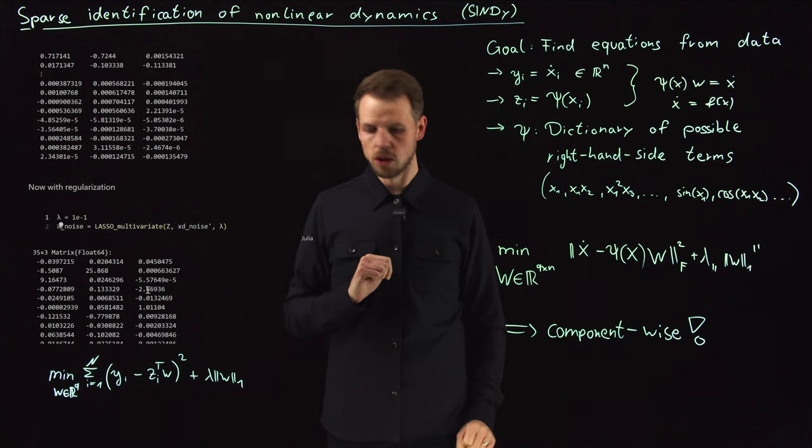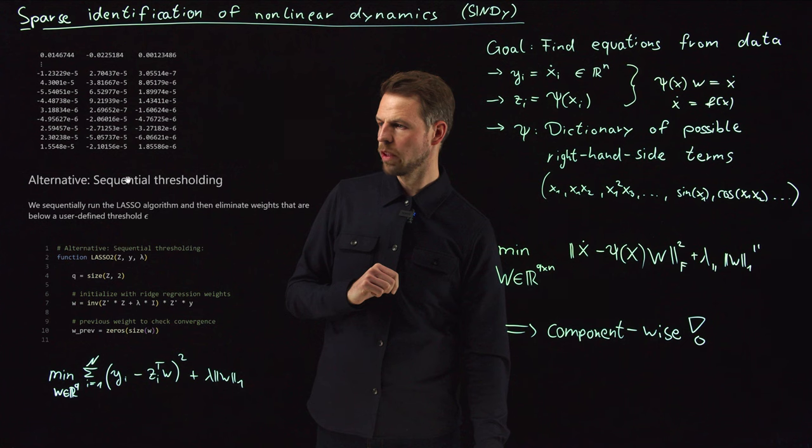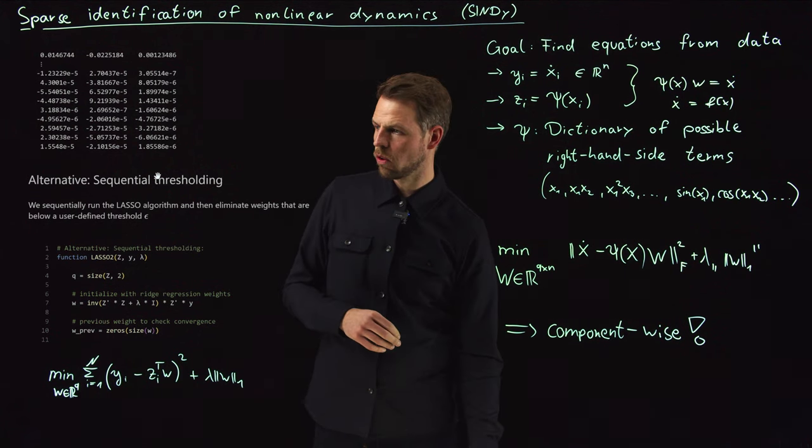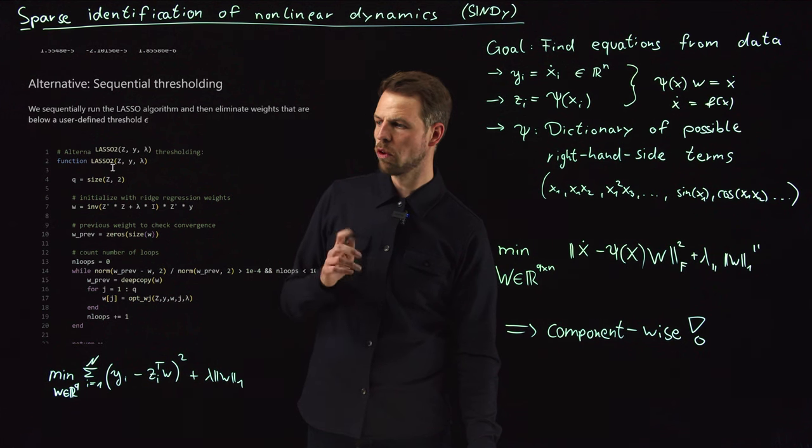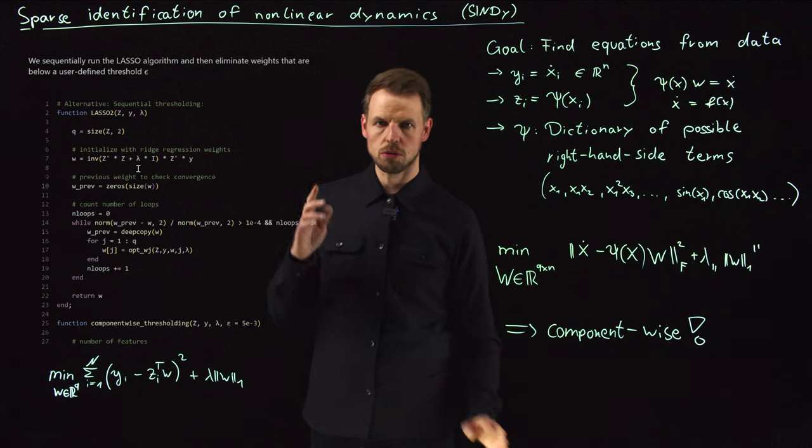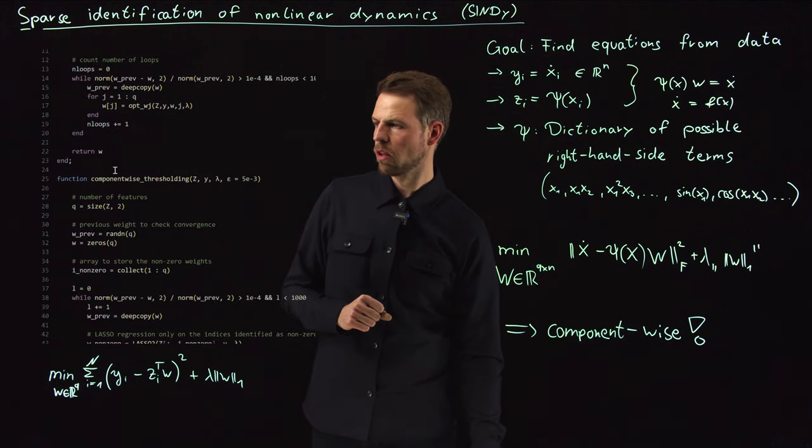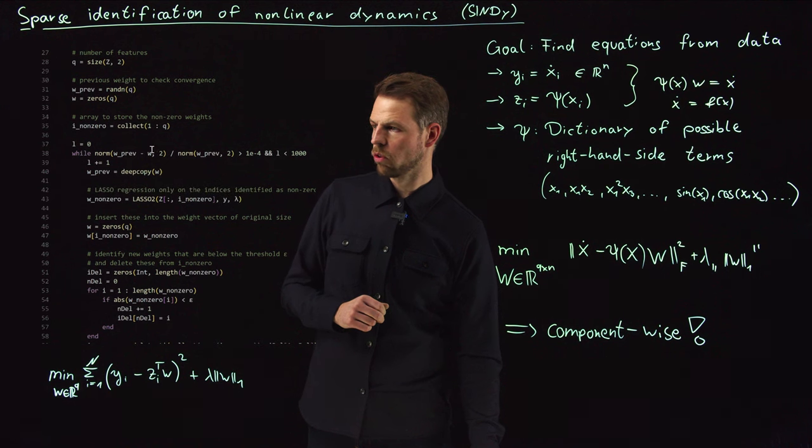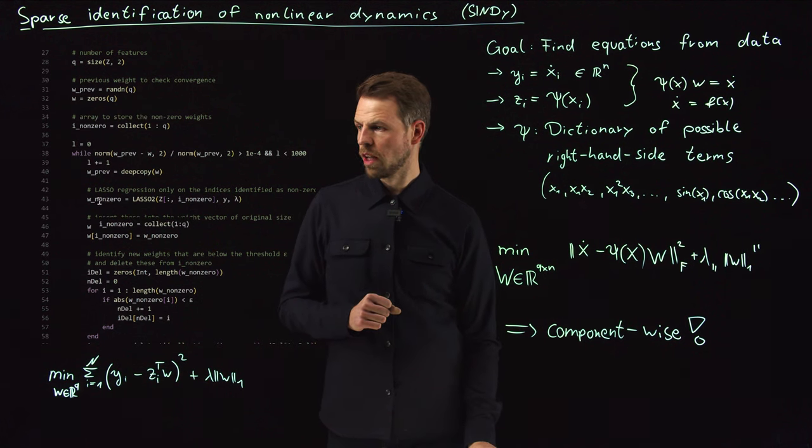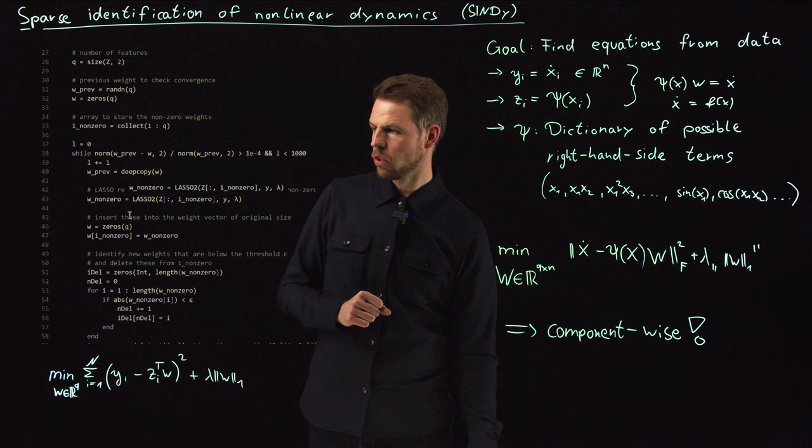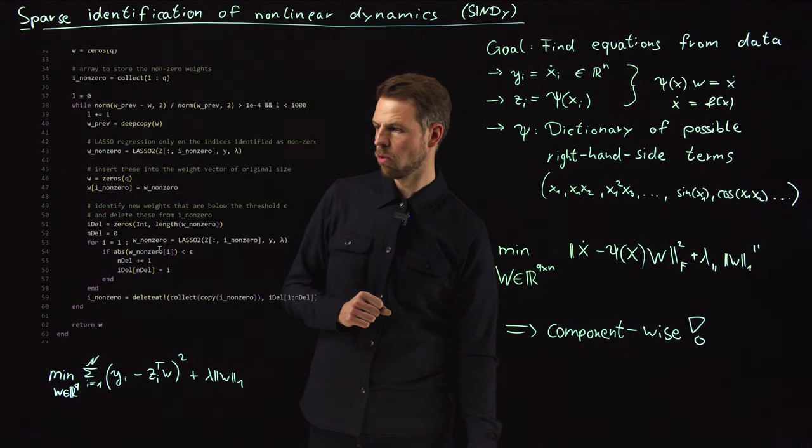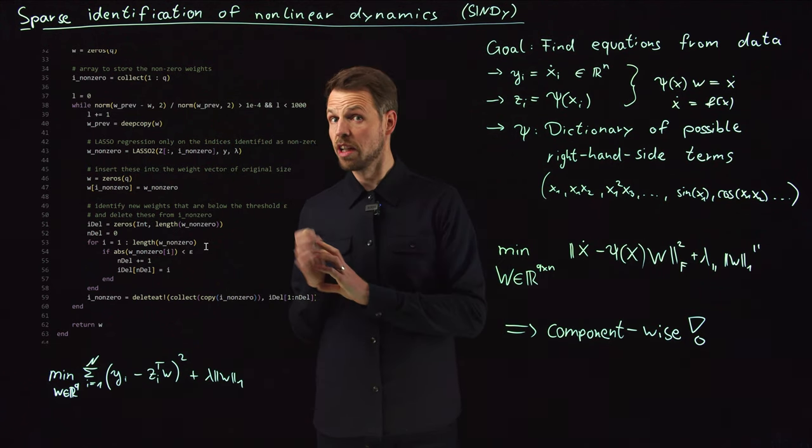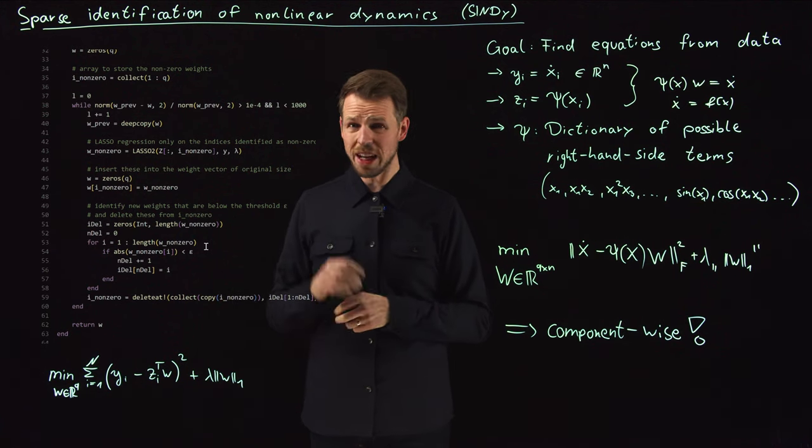One thing that we have not talked about until now is the problem that we can actually use thresholding to manually kill weights that are of a small value. All I'm doing now is I'm adding, this is my lasso algorithm now, a lasso 2 version basically. This component-wise thresholding is really what's important here. What this means is you do the lasso over the non-zero weight. You start with all indices are non-zero. You do the lasso over the non-zero weights here and then you identify which weights to set zero if they are smaller than a certain user-defined threshold epsilon.